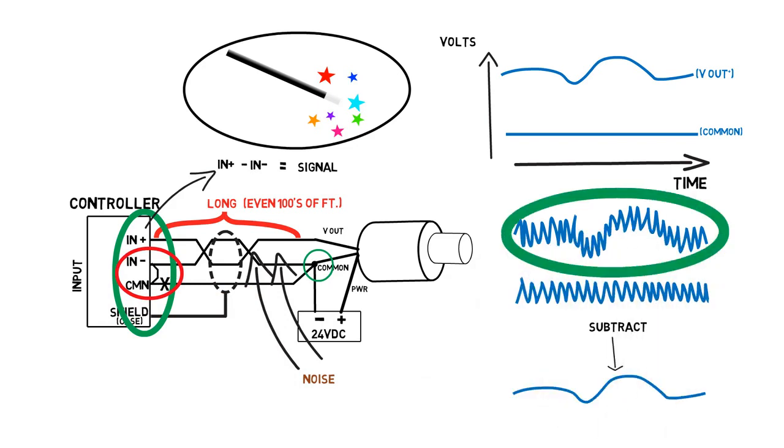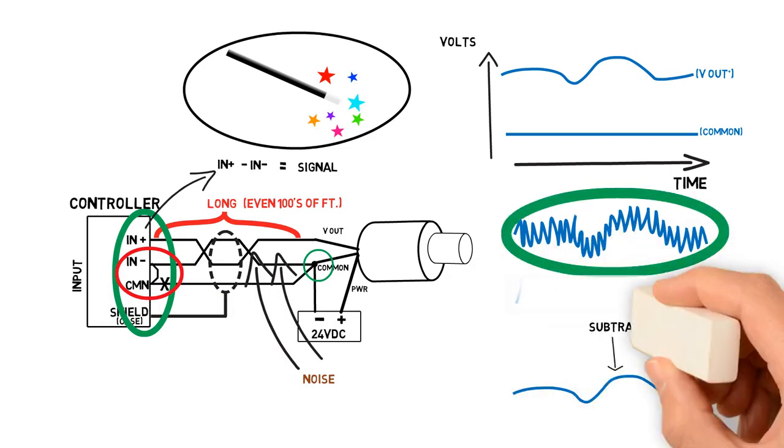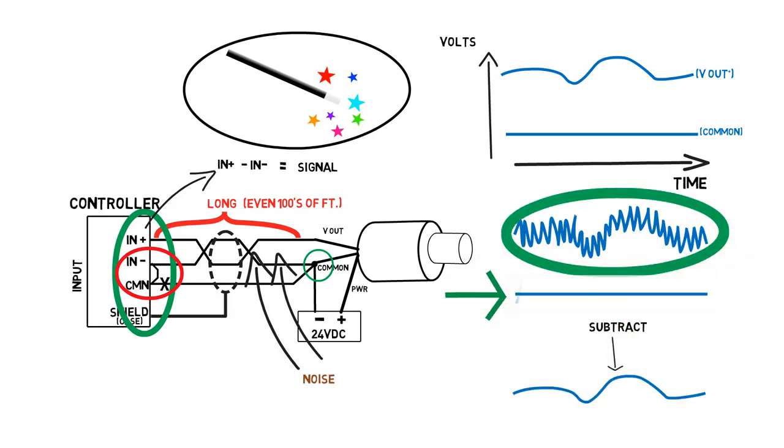The in plus pin will see the noise, but the in minus pin does not see any noise because that noise is shunted directly to common. Therefore, subtracting the signals cannot cancel the noise.